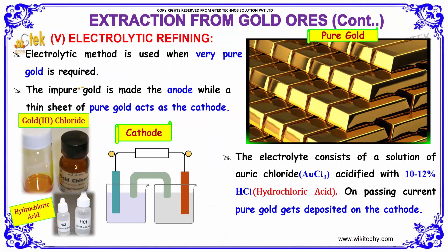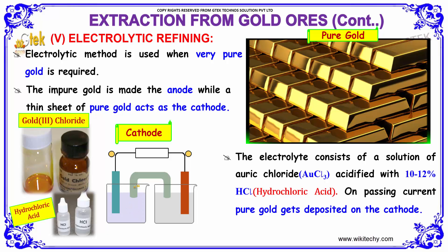This is the final step: electrolytic refining. The electrolytic method is used when very pure gold is required. The impure gold is made the anode, where a thin sheet of pure gold acts as the cathode. The electrolyte consists of a solution of auric chloride acidified with hydrochloric acid. On passing current, pure gold gets deposited on the cathode.